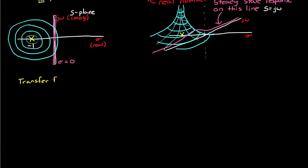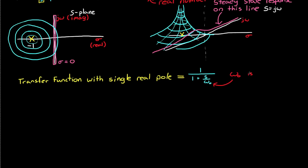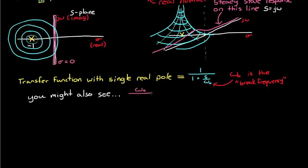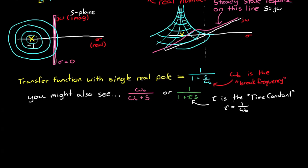Let's start with a single real pole and solve for the frequency response. The transfer function for a real pole should be written as 1 over (1 + S/ω₀). This form makes recognizing the break frequency ω₀ — sometimes called the corner frequency — easier. Depending on your industry or textbook, you might also see this written as ω₀ over (ω₀ + S), or as 1 over (1 + τS), where τ is the time constant equal to 1/ω₀. All three representations are equivalent, but we'll use the first form for the rest of this video.